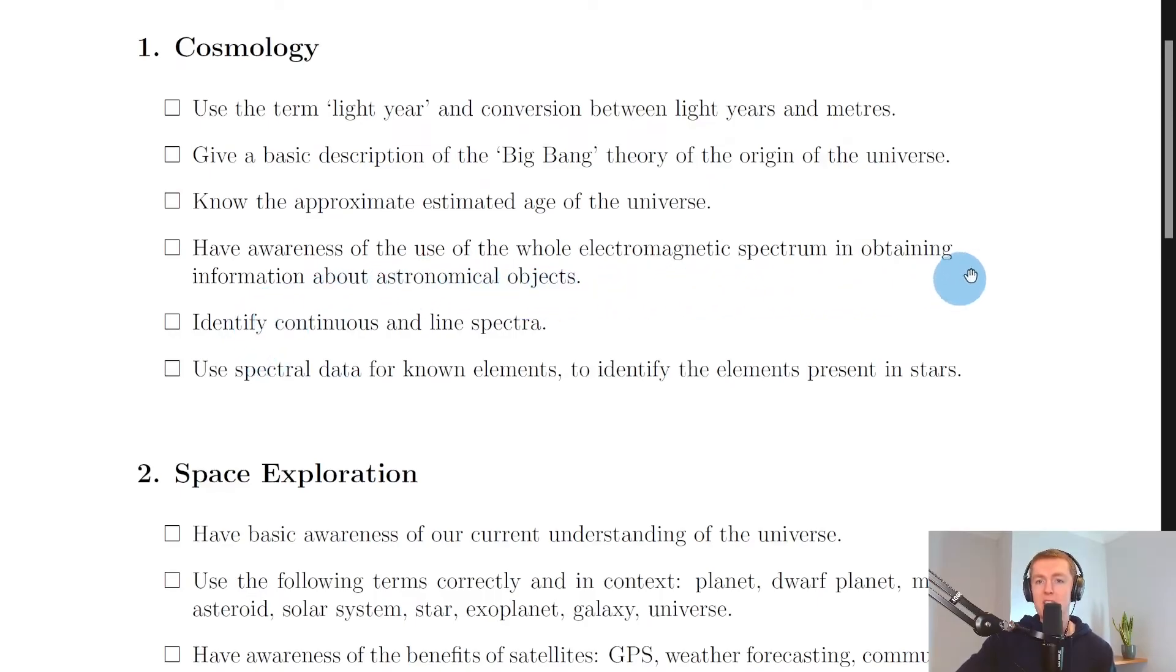Next, you need to have awareness of the use of the whole electromagnetic spectrum in obtaining information about astronomical objects. So remember, different types of detectors are needed to pick up different types of signals. If we think about detectors for each of them: for radio or TV waves we have an aerial, for microwaves we have an aerial as well, for infrared waves we would have a photodiode, for visible light we would have the retina of the eye, for ultraviolet waves we would have fluorescent chemicals, for x-rays we would have photographic film, and for gamma rays a Geiger-Muller tube.